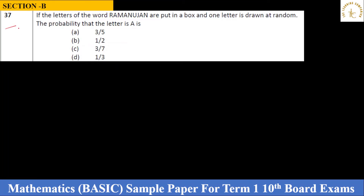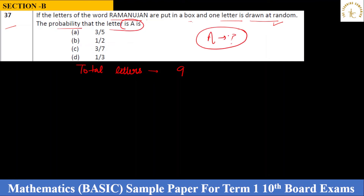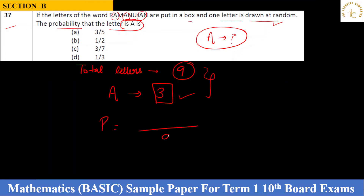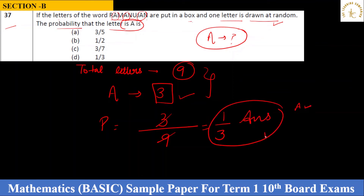Question 37: If the letters of the word RAMANUJAN are put in a box, what is the probability of picking the letter A? RAMANUJAN has 9 letters total, and the letter A appears 3 times. So probability = 3/9 = 1/3. The final answer is 1/3. This is a very basic probability question — don't leave it.